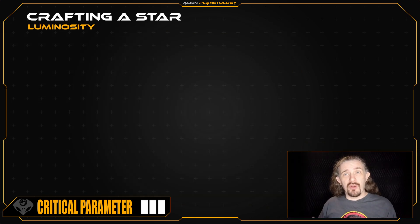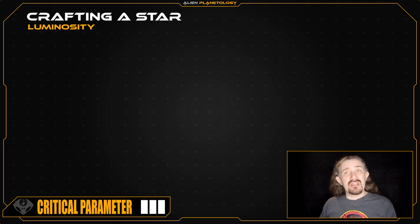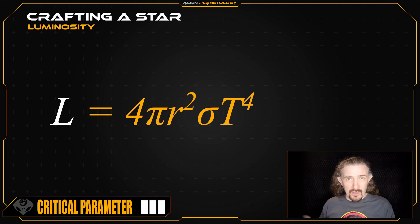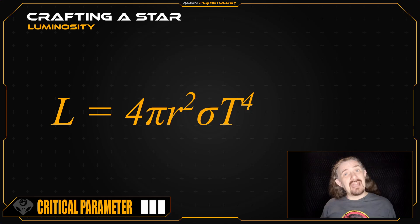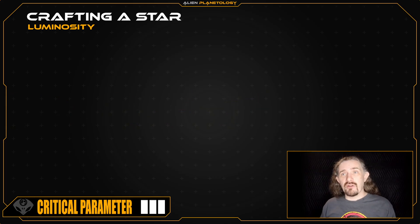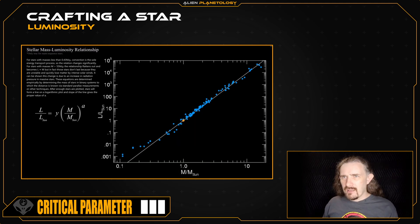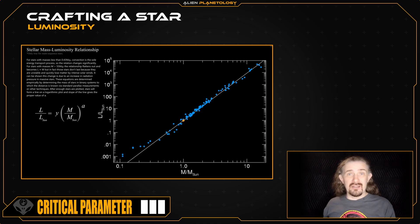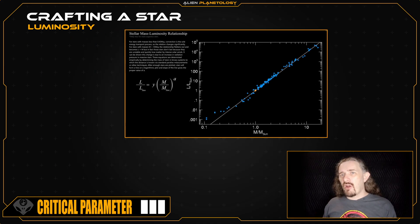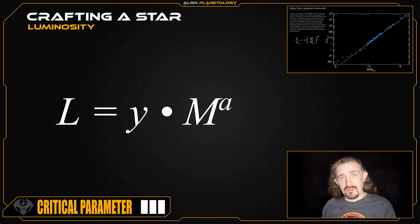Next we are going to calculate our star's luminosity. Luminosity is a measure of how much energy a star emits per second, so this is an extremely important parameter for the planets that orbit it. The usual method of calculating a star's luminosity requires knowing the star's effective temperature and its size, but we don't yet know the size of our star, so we'll have to use a different method. Fortunately, main sequence stars follow a mass-luminosity relationship, as illustrated by this graph. Here we have luminosity along the vertical axis and mass along the horizontal axis, with the blue dots being measured stars and the orange dot near the center representing our sun. To have our star follow this same relationship, we can use this equation.